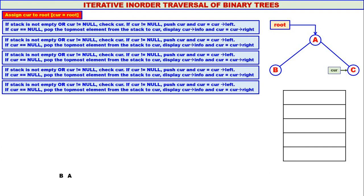Again, stack is not empty or curry not equal to null — we check curry. In our case, stack is empty but curry is not equal to null. So we push curry — address of node C is pushed onto the stack. And curry moves to curry's left. There is no left child for C, so curry becomes null.